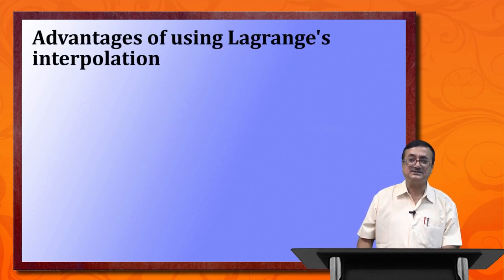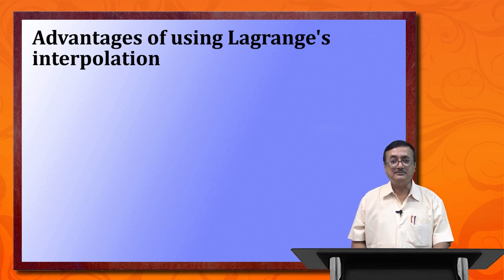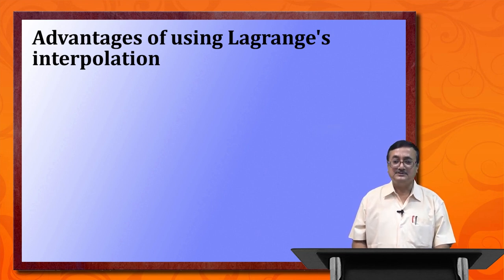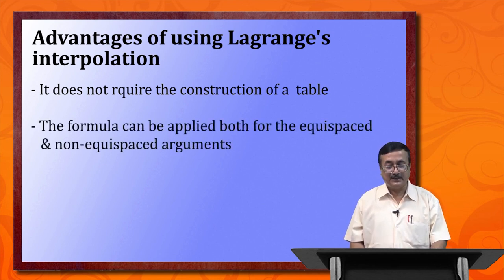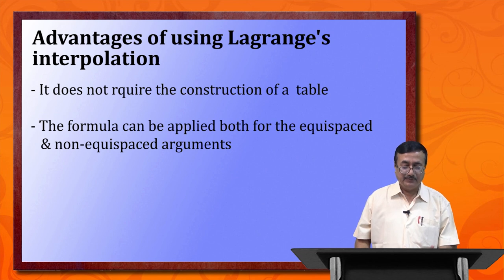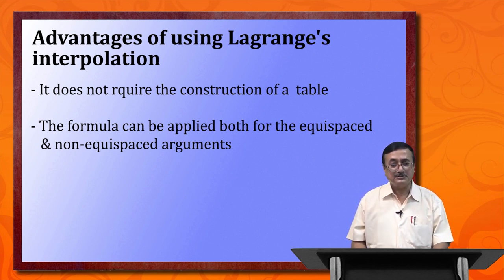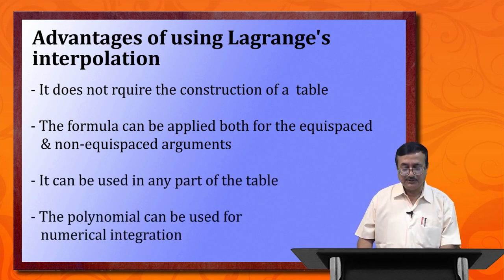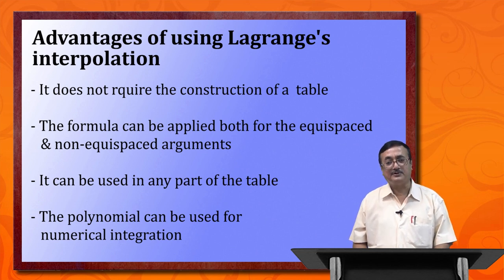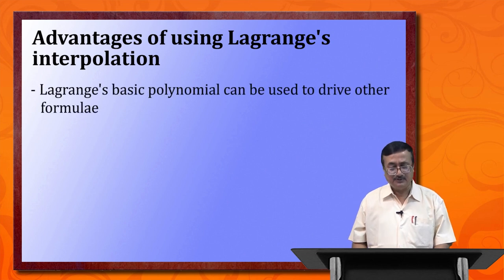What are the advantages of using Lagrange's interpolation formula? It is much superior to other interpolating formulas such as Newton's formula, Stirling, or Bessel formula because it does not require the construction of a difference table. The formula can be applied both for equispaced and non-equispaced nodes, and also in cases when x_i's are not in order. It can be used in any part of the table, and this polynomial can be used for finding formulas for numerical integration. Lagrange's basic polynomial can also be used to derive other formulas.